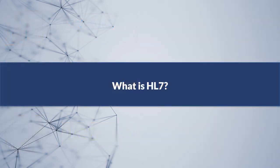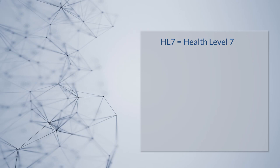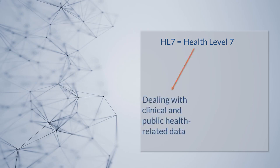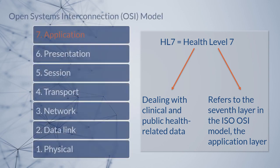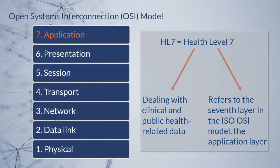We just mentioned that HL7 is a widely used set of standards for exchanging health data. Before we dive into the HL7 standards themselves, let's talk about some background and history of HL7. HL7, or Health Level 7, is a set of messaging standards that promotes interoperability by allowing clinical applications to exchange data. HL7 standards cover topics related to clinical and public health data, including laboratory reporting, vaccinations, cancer registries, newborn screening, and many others. The 7 in HL7 refers to the seventh layer in the International Standards Organization's Open Systems Interconnection Model.